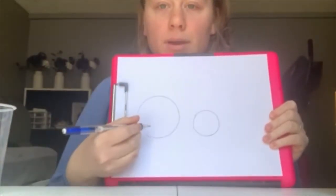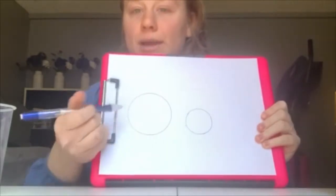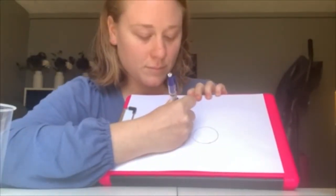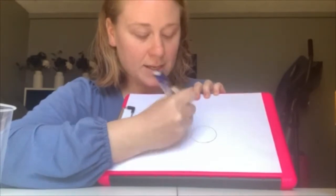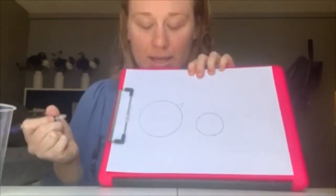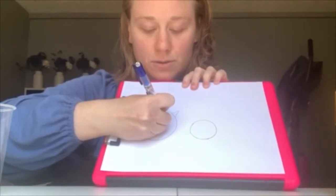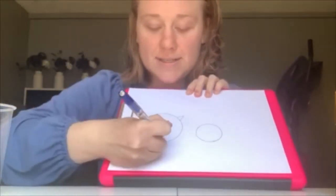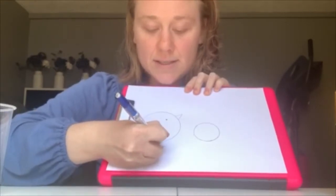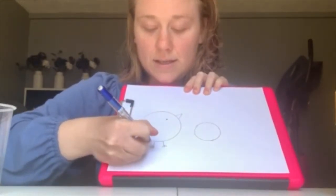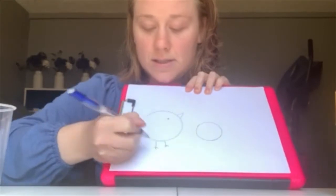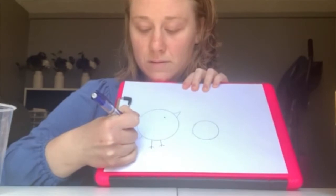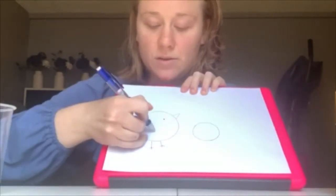So for the mama bird I'm going to draw a beak going up. And there's my triangle and one little circle for the mama's eyeball. Now she needs some legs and a tail and a little wing.